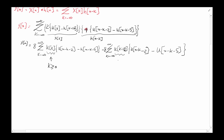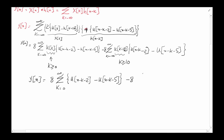Now, u of k equals one when k is greater than or equal to zero, which allows us to change the lower summation limit. For the second term, u of k minus 10 equals one when k is greater than or equal to 10. So y of n equals eight times the summation of k from 0 to infinity of u of n minus k minus two minus u of n minus k minus five, minus eight times the summation of k from 10 to infinity of the same bracket.